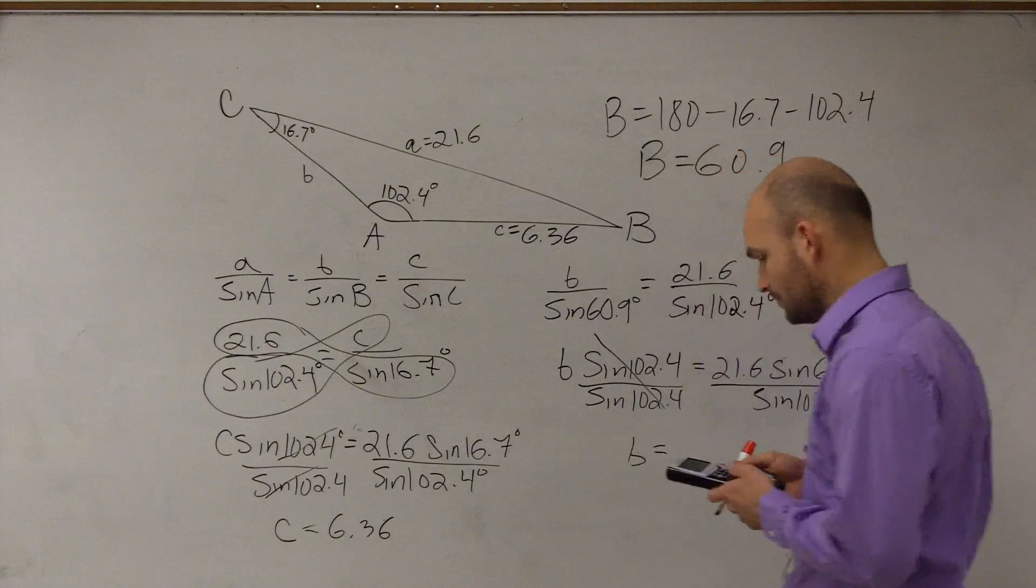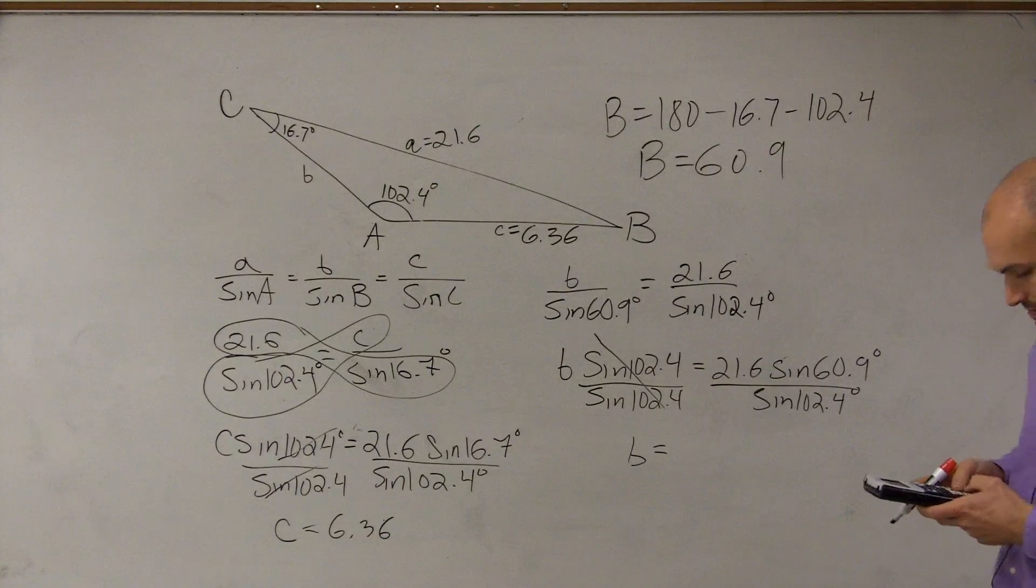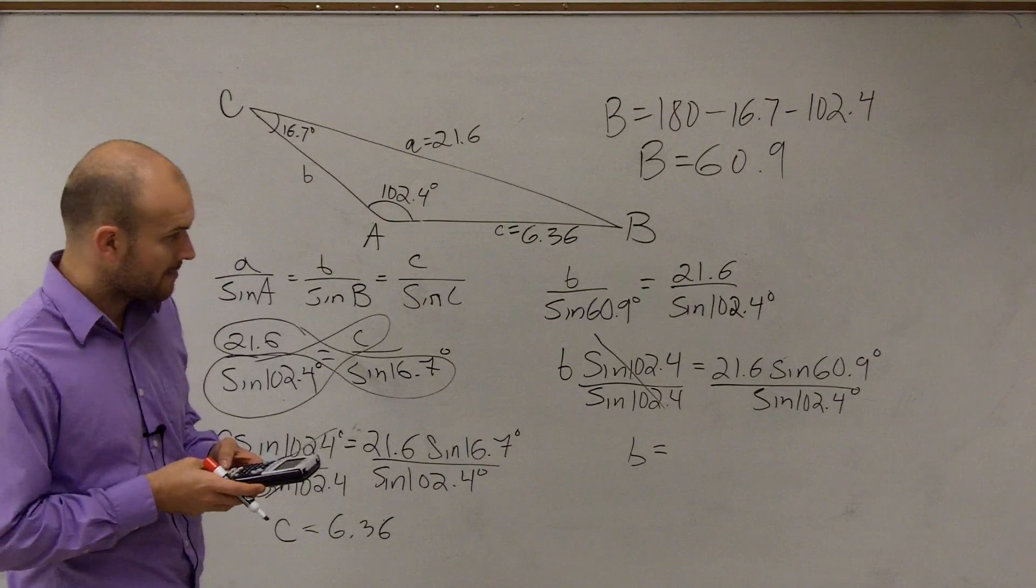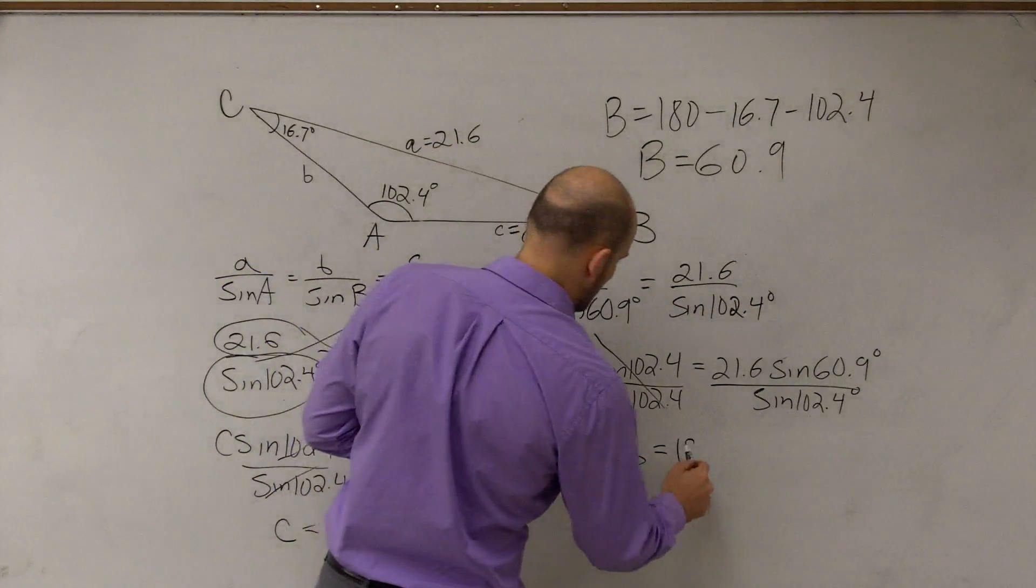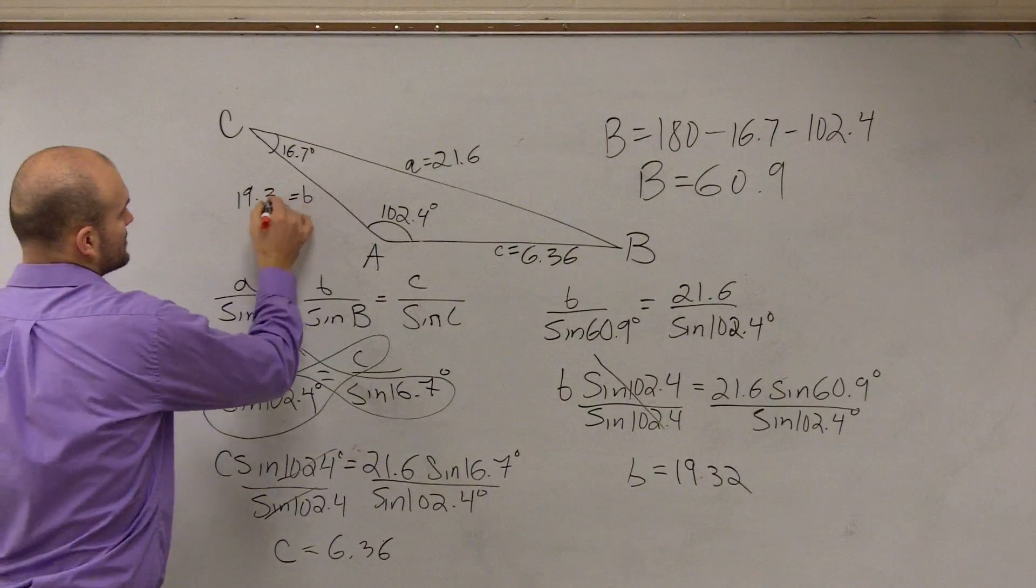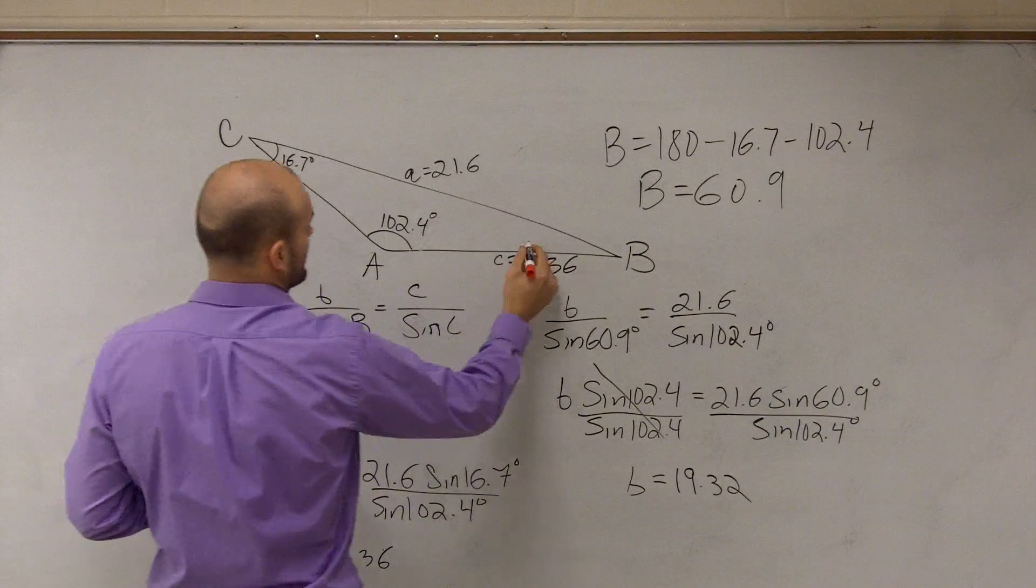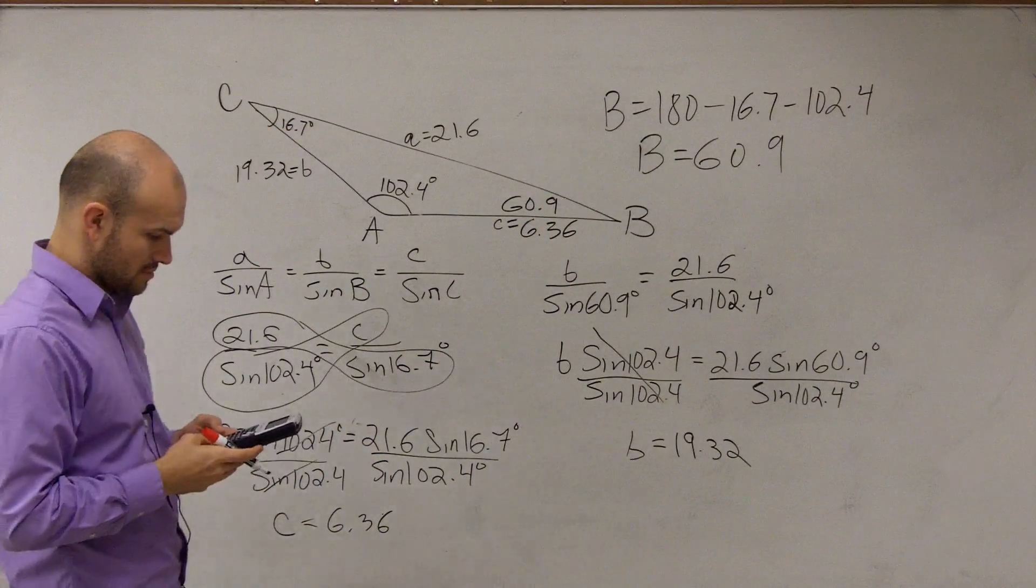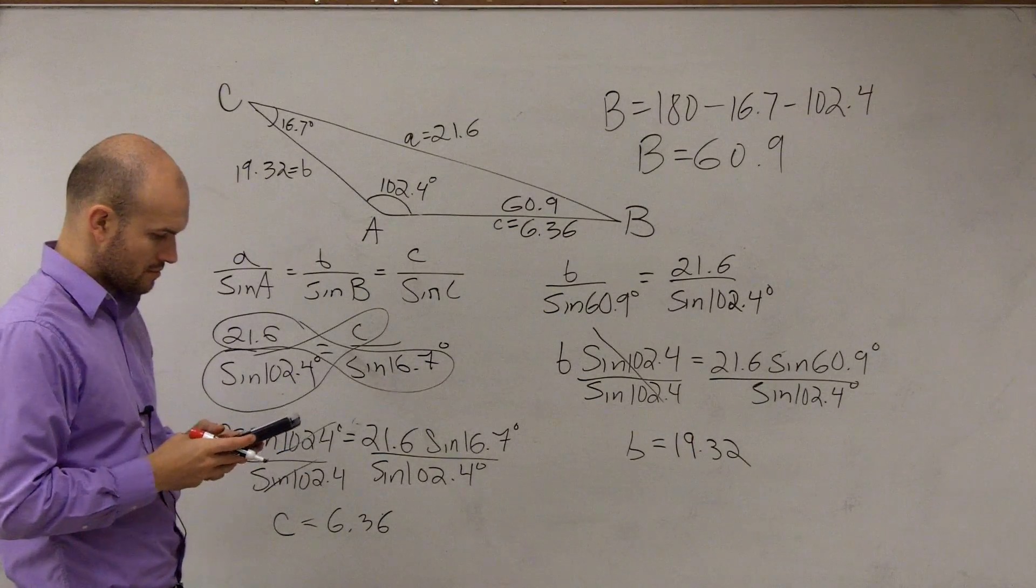B now equals—so I do 21.6 times the sine of 60.9, divided by the sine of 102.4, and I get 19.32. So there we can just say B equals 19.32, and angle B equaled 60.9.